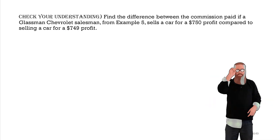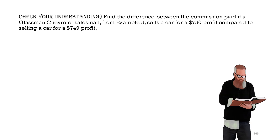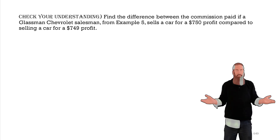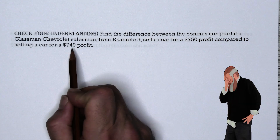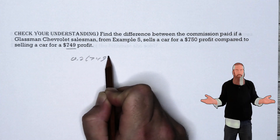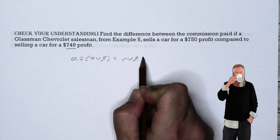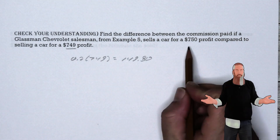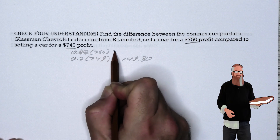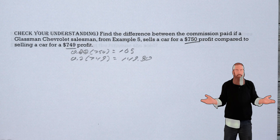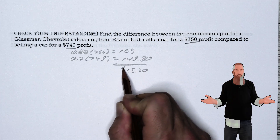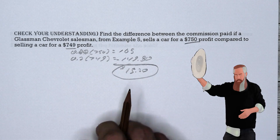Let's check our understanding. Find the difference in commission between a $750 profit sale and a $749 profit sale at Glassman Chevrolet. For $749: 0.20 × 749 = $149.80. For $750: 0.22 × 750 = $165.00. The difference is $165.00 − $149.80 = $15.20 — a $15.20 difference in commission based on just $1 more in profit.